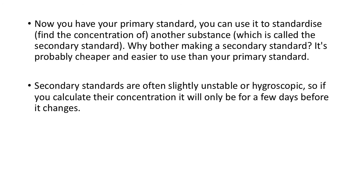Now you have your primary standard as a solution. You can use it to standardise another substance — to find the concentration of another solution — and that other solution is called a secondary standard because it doesn't have the same properties as a primary standard. Secondary standards are generally cheaper and easier to use. However, secondary standards are often unstable and hygroscopic, meaning they're only reliable for a day or so. If you use them after a couple of days, the concentration will have changed. Since we need high accuracy, you must re-standardise the secondary standard every time you want to use it properly.